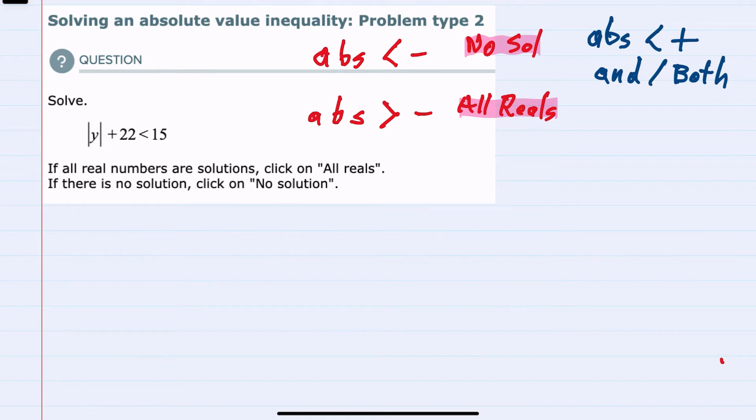This would be an and situation, where we would need both solutions to be true at the same time, so we would be looking for where the solutions overlap.